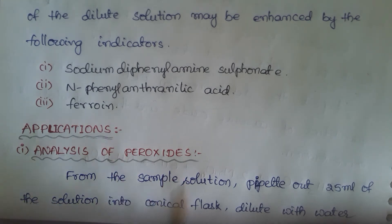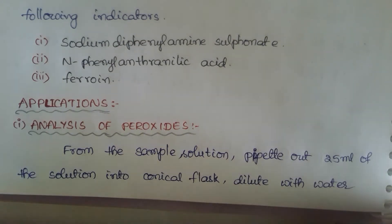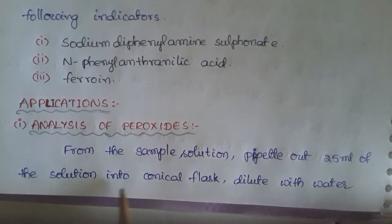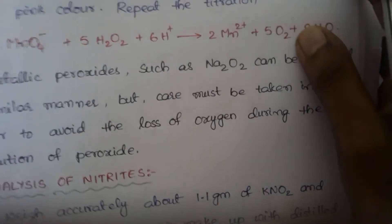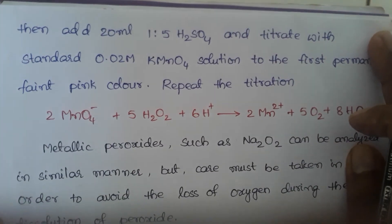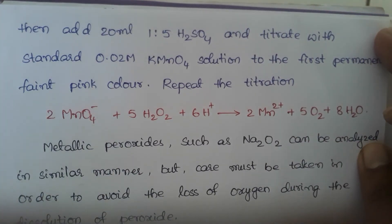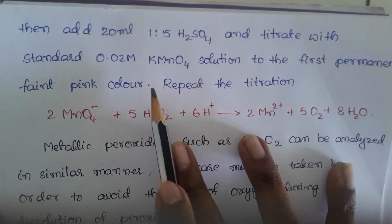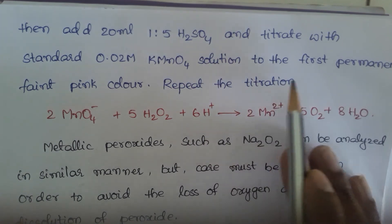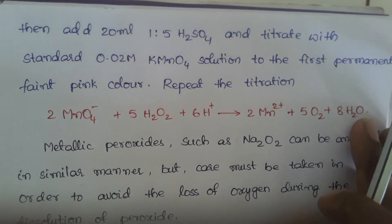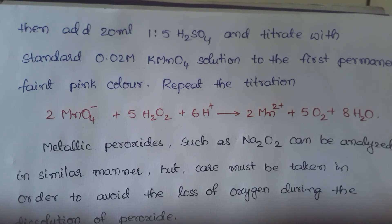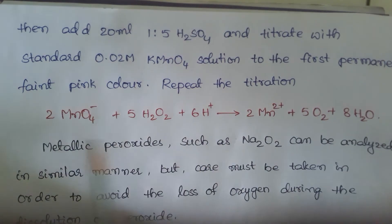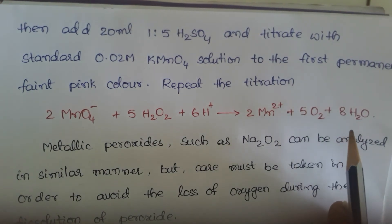Application — analysis of peroxides: pipette out 25 ml of the sample solution into a conical flask, dilute with water, add 20 ml of 1:5 H2SO4 solution, and titrate with standard 0.02 molar KMnO4 solution to a pale pink color endpoint. The corresponding redox reaction proceeds as shown.